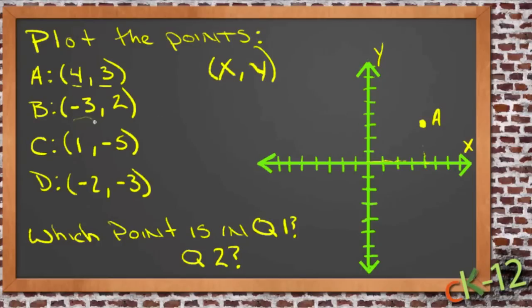Then for point B, we have negative 3, positive 2. So negative on the x-axis is to the left, so we have 1, 2, 3. And we still have a positive 2 on the y-axis, so that's up 2. So we have point B right there.